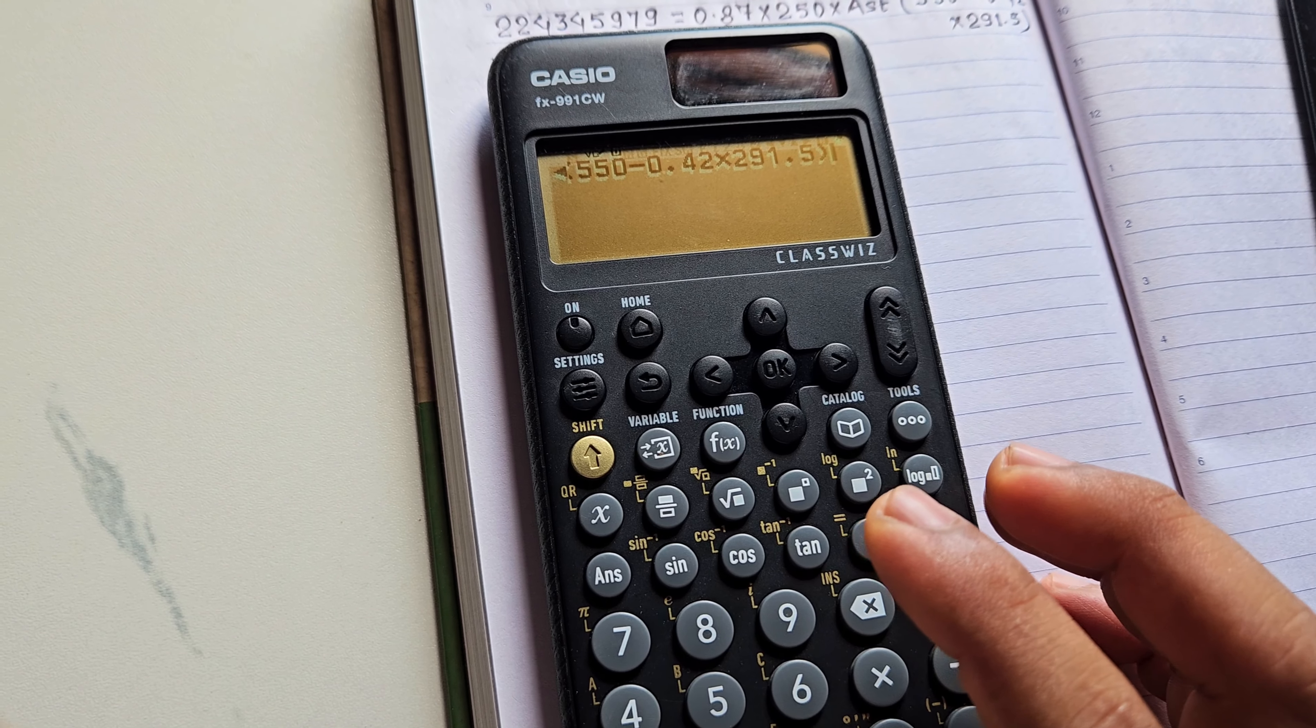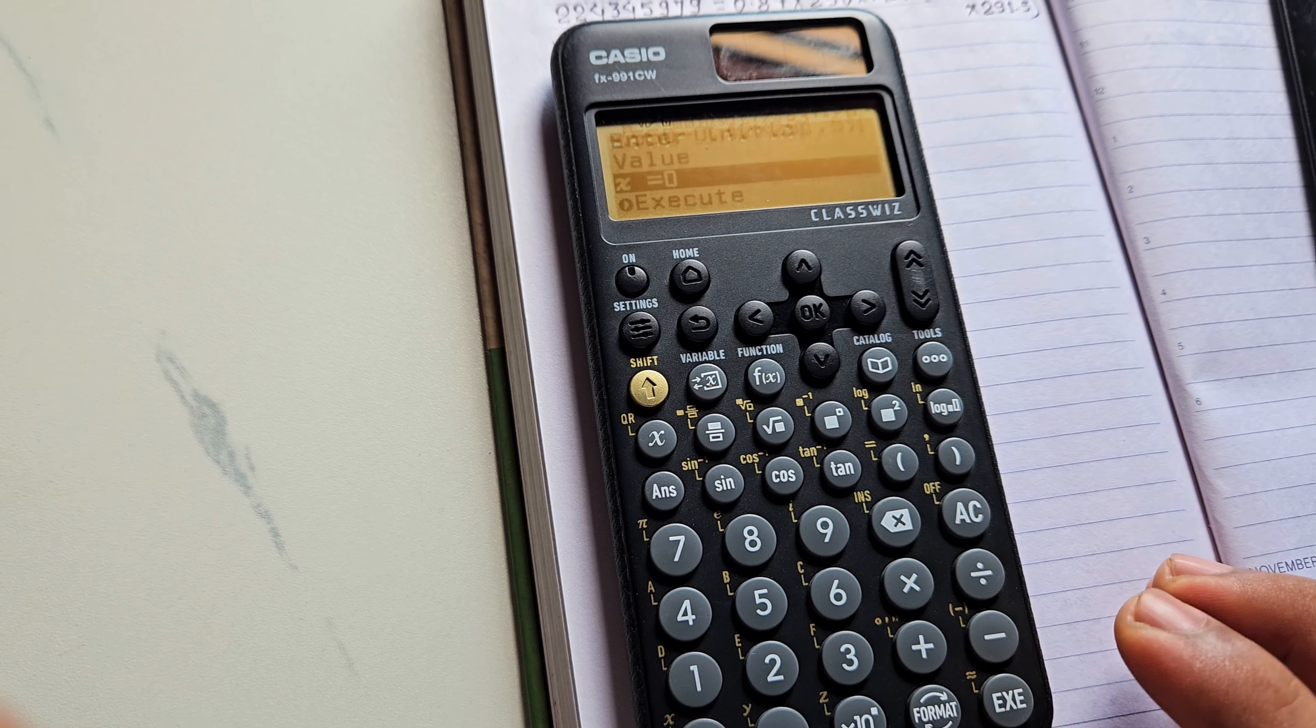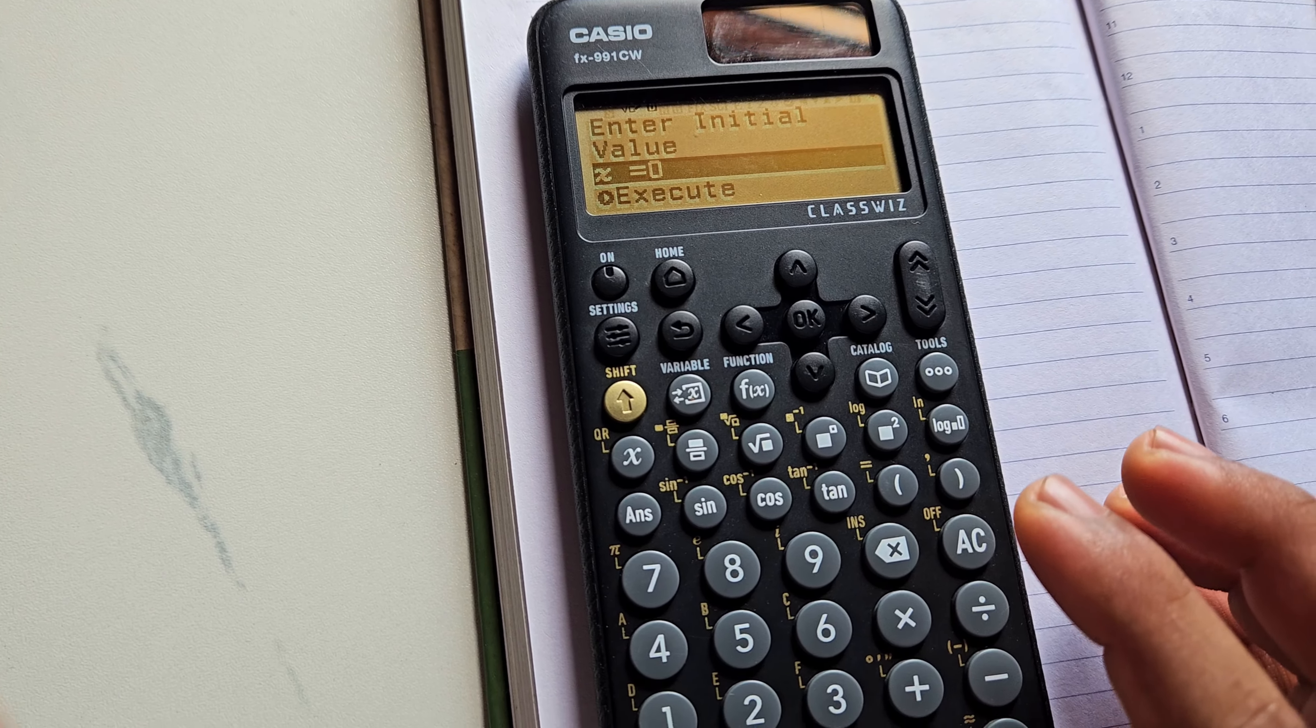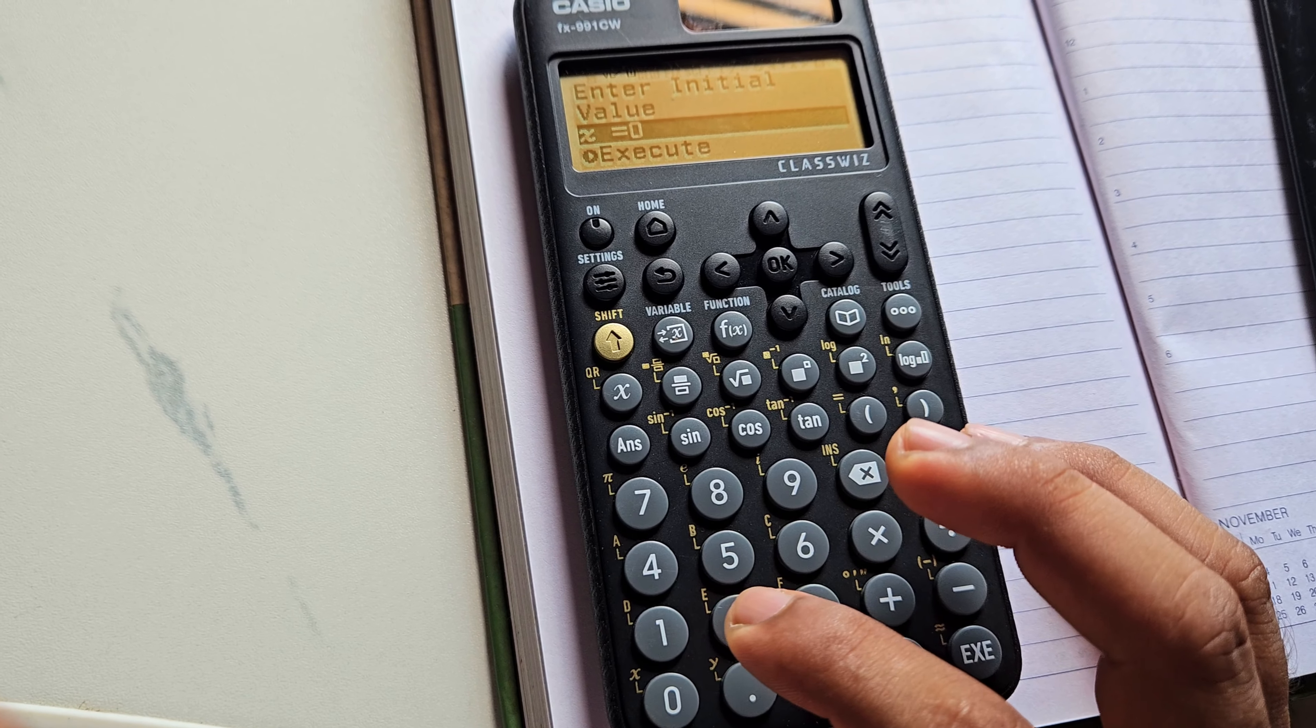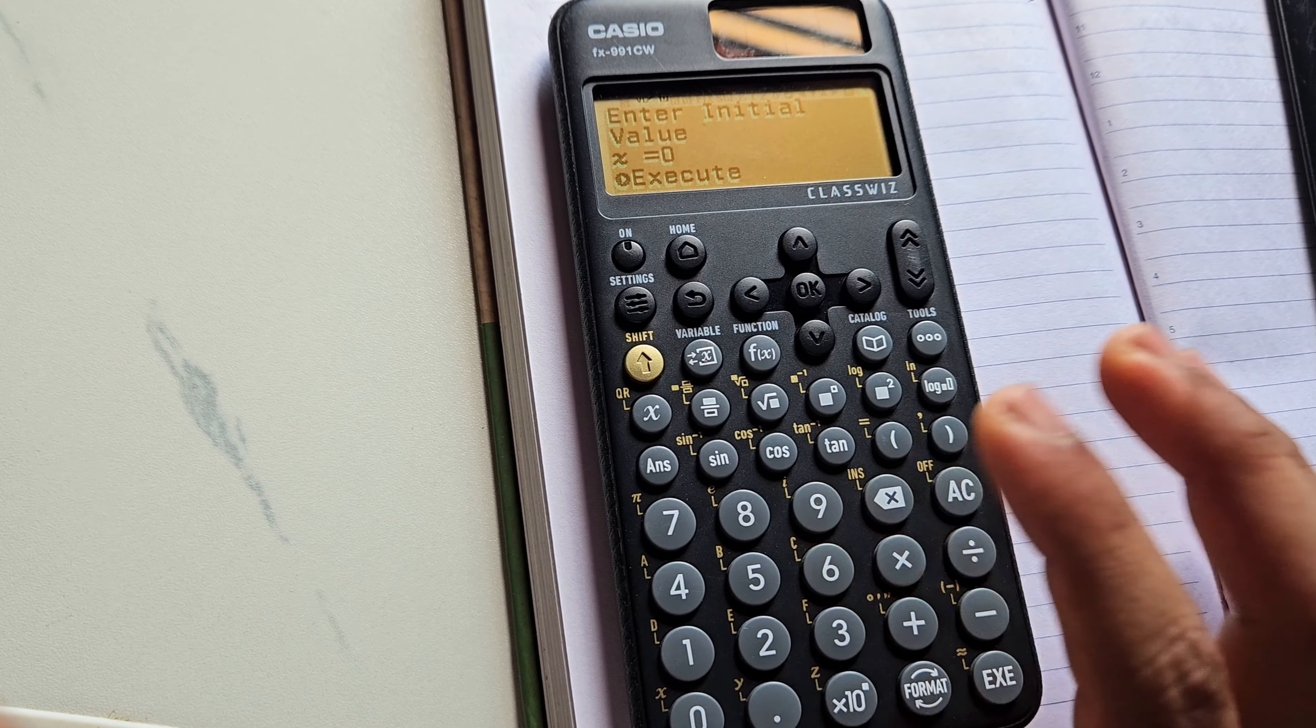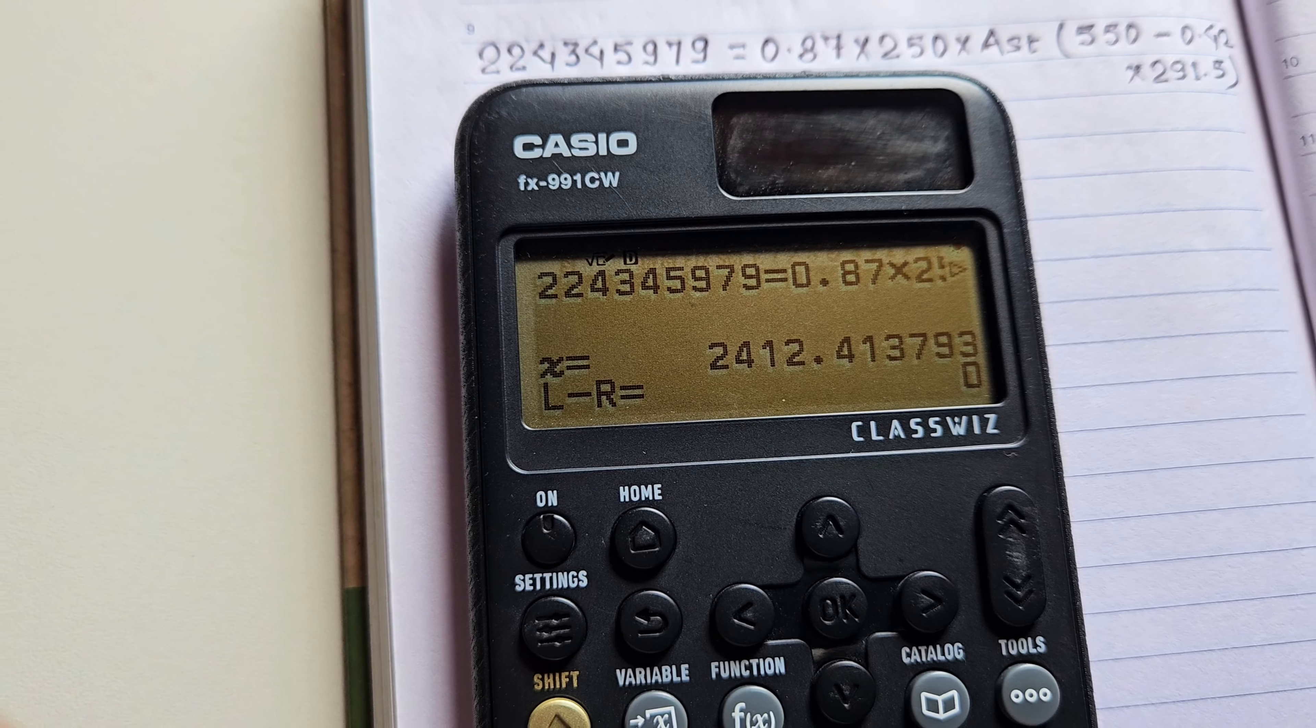If you want to enter some other value for X, it will still give the same value. Execute, then again it's asking enter initial value X. Suppose I keep here zero instead of 100. And again execute. Then still you can get the same value: 2412.413793.